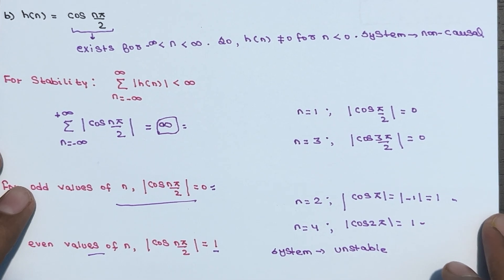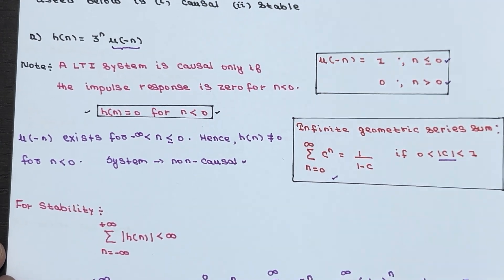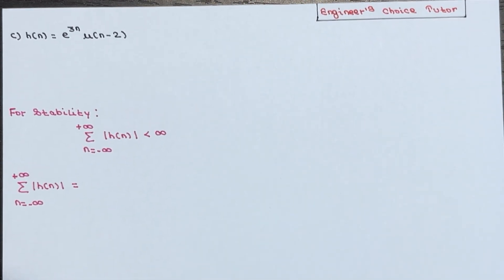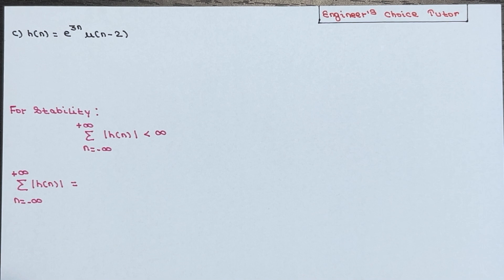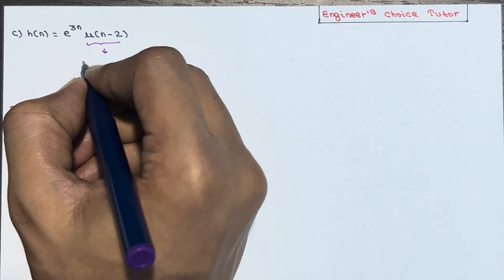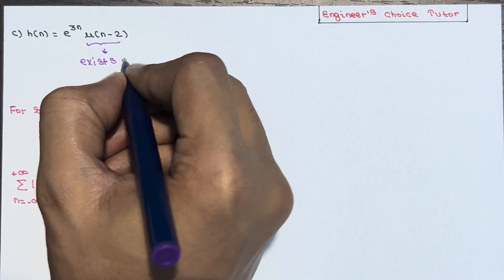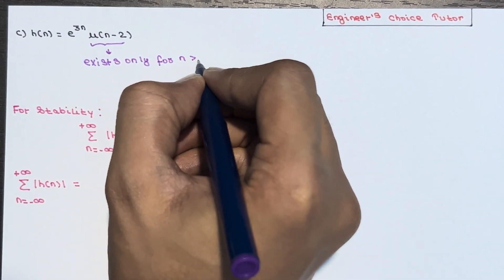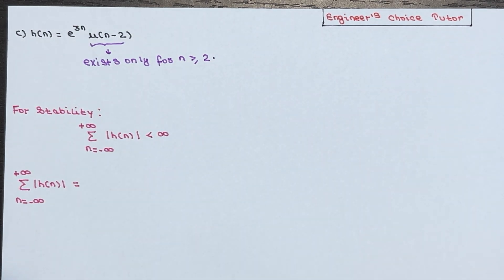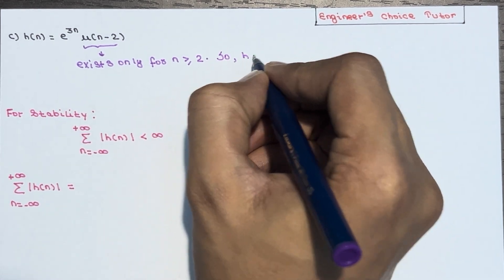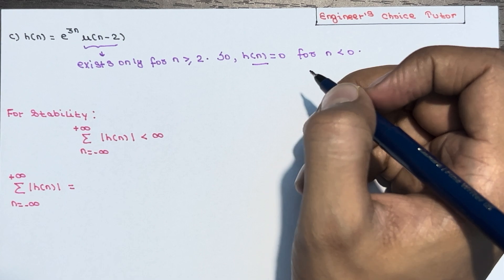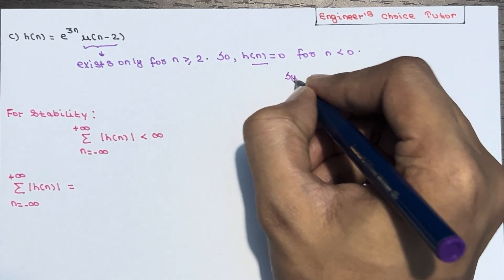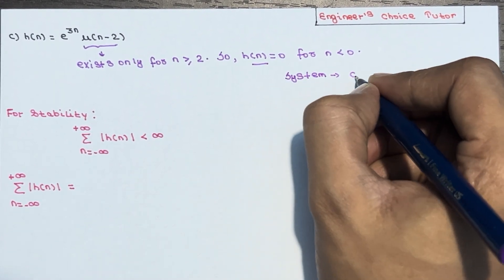Let's go to the next example: h(n) = e^(3n) · u(n-2). You should know the behavior of u(n-2): it only exists for n greater than or equal to 2. Since it exists only for n ≥ 2, h(n) will automatically be 0 for n less than 0. Since this condition is satisfied, the system is causal.